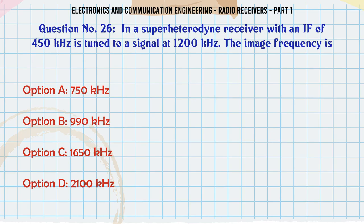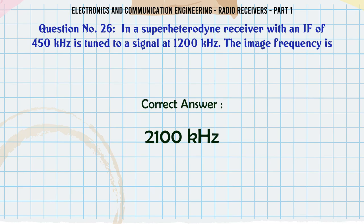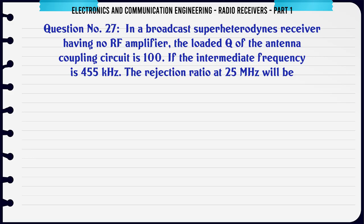In a superheterodyne receiver with an IF of 450 kHz, tuned to a signal at 1200 kHz, the image frequency is: A. 750 kHz. B. 990 kHz. C. 1650 kHz. D. 2100 kHz. The correct answer is 2,100 kHz.